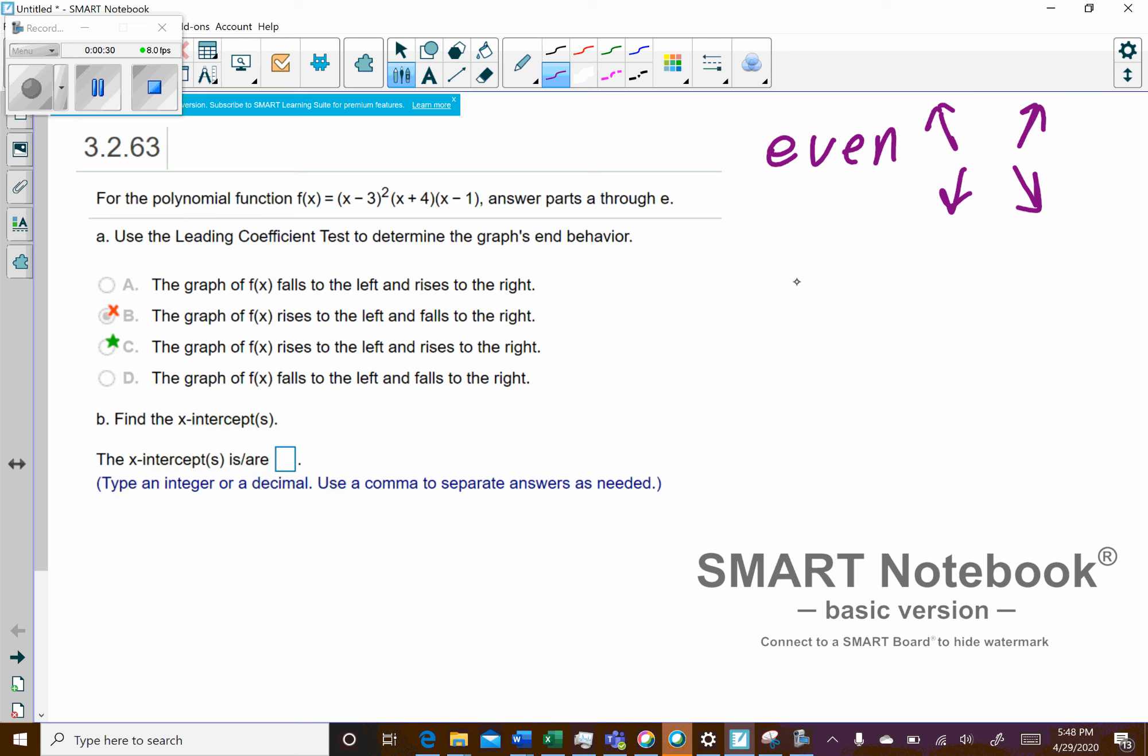If you have odd, then you'll have one that goes up, one that goes down, or it could go the other direction. And that will depend upon if the coefficient is positive or negative.